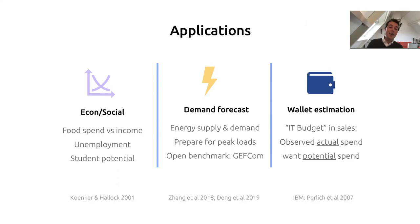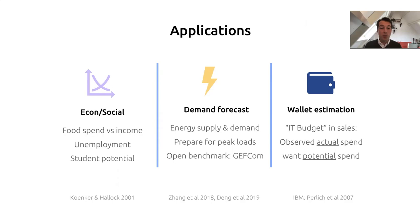The last example I want to highlight is wallet estimation. IBM noticed they had a lot of data about the sizes of deals with different clients. Their sales team knows that when you know in a negotiation what the potential spend is — for example, the entire IT budget of a company — you're in a much better position to negotiate because you know the ceiling. You only observe in the data what people actually spend, but what you want to know is the potential spend. This is one place to apply quantile regression — for example, the 80th percentile of spend.